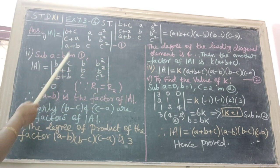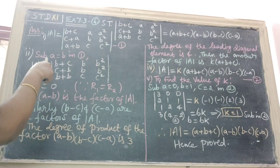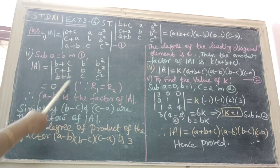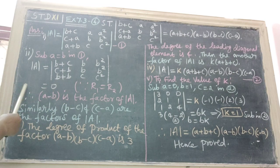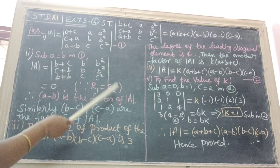Then substitute here A equal to B in one. Here R1 is equal to R2. Therefore, the determinant value, determinant A equal to 0. Therefore, A minus B is the factor of determinant A.